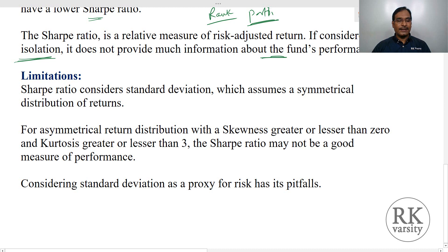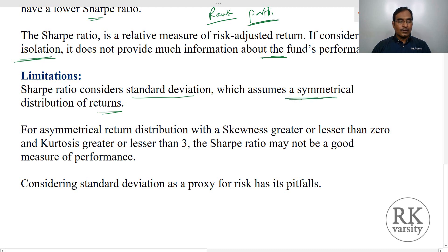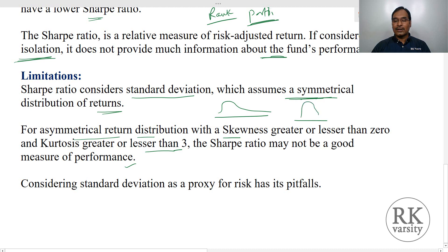The limitations of the Sharpe Index are: first, it considers standard deviation — stock-specific or individual risk — and assumes a symmetrical distribution of returns, meaning the return series is normally distributed. Many times data may not be normally distributed around its mean. For asymmetrical returns — non-normal data distribution with skewness greater or less than 0, or kurtosis less than 3 — the Sharpe Ratio may not be a good measure.